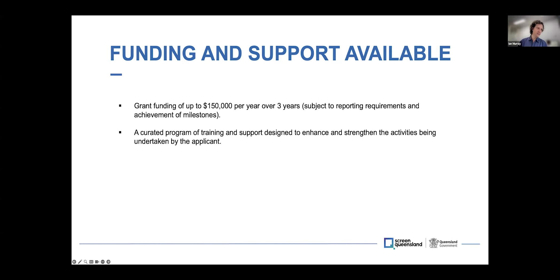There are two things available as part of this enterprise program. There is grant funding of up to $150,000 per year, and that can be for up to three years, subject to meeting reporting requirements and achievement of milestones. And then secondly, for successful applicants, there will also be a training program curated to each individual, designed based around the activities the companies are undertaking and where they are in their life cycle. We'll be creating bespoke education modules — it won't be a group training environment.